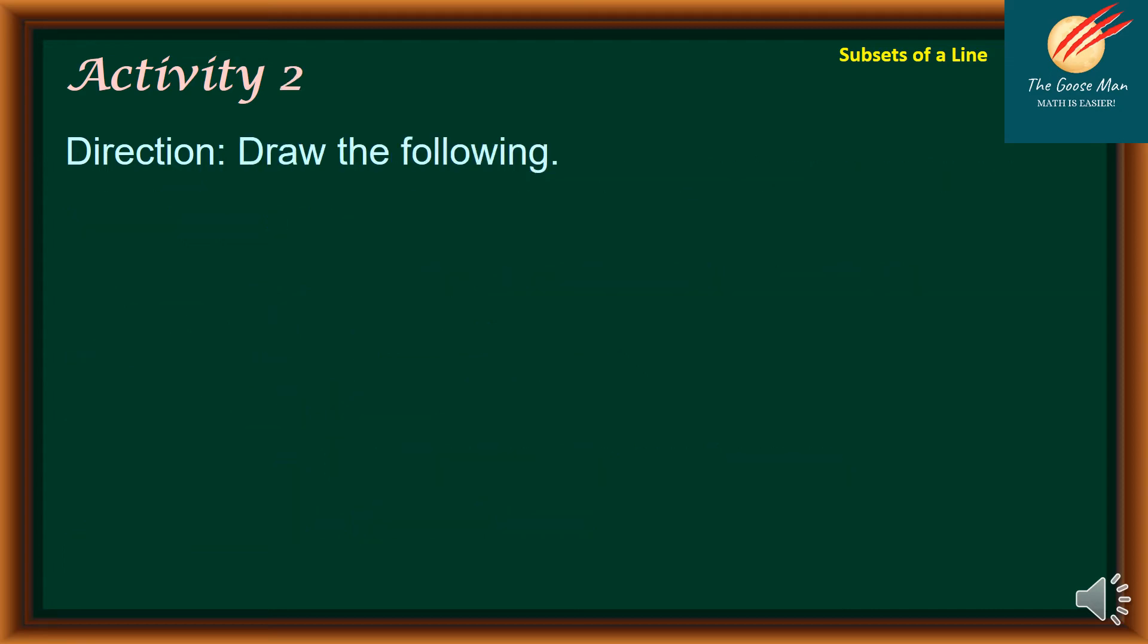Let's move on to activity number two. We draw the following. Number one, ray AB. In order to draw ray AB, we will consider the letters A and B, put them together. We start with the endpoint A going to the direction of B. So this is ray AB.